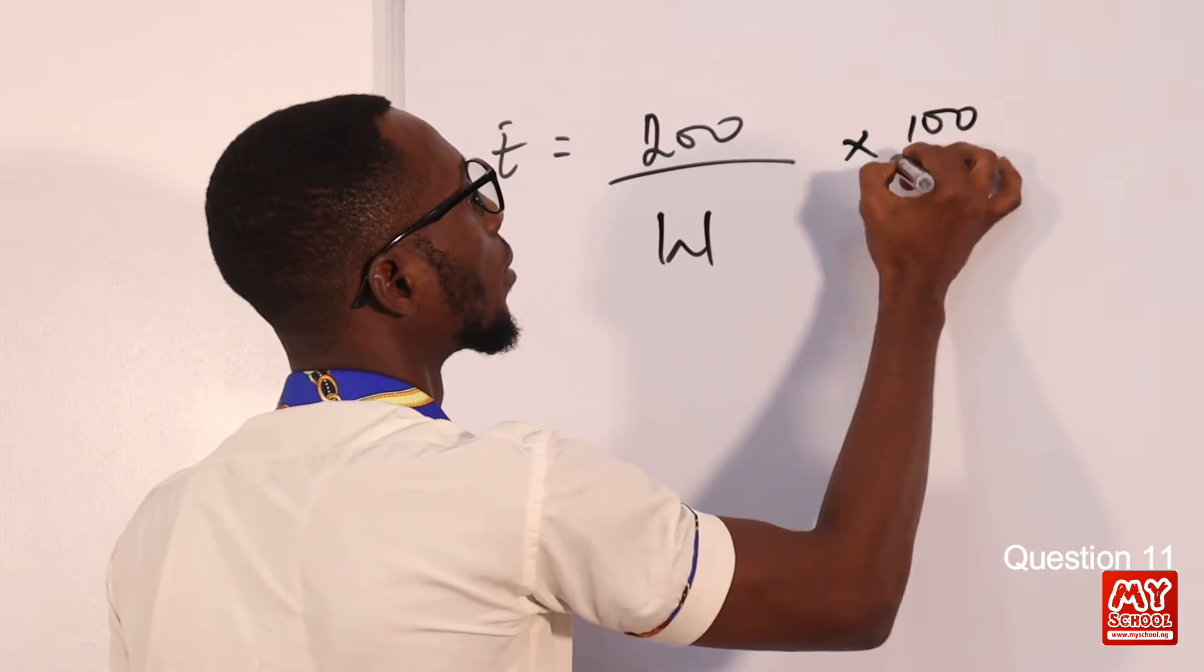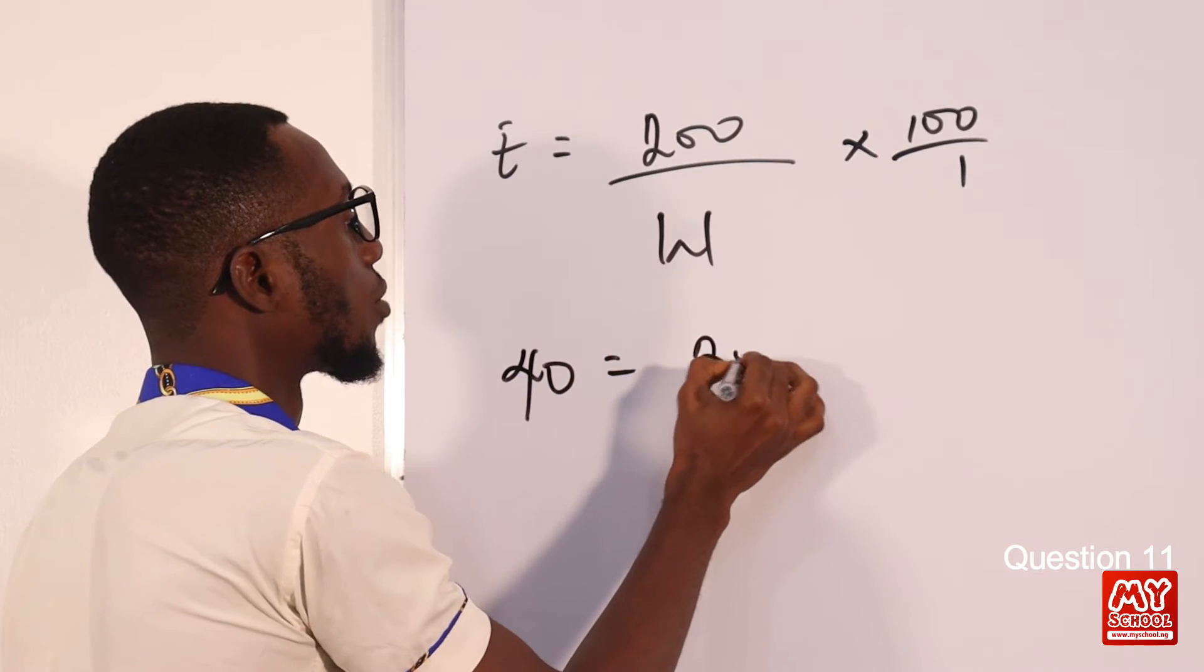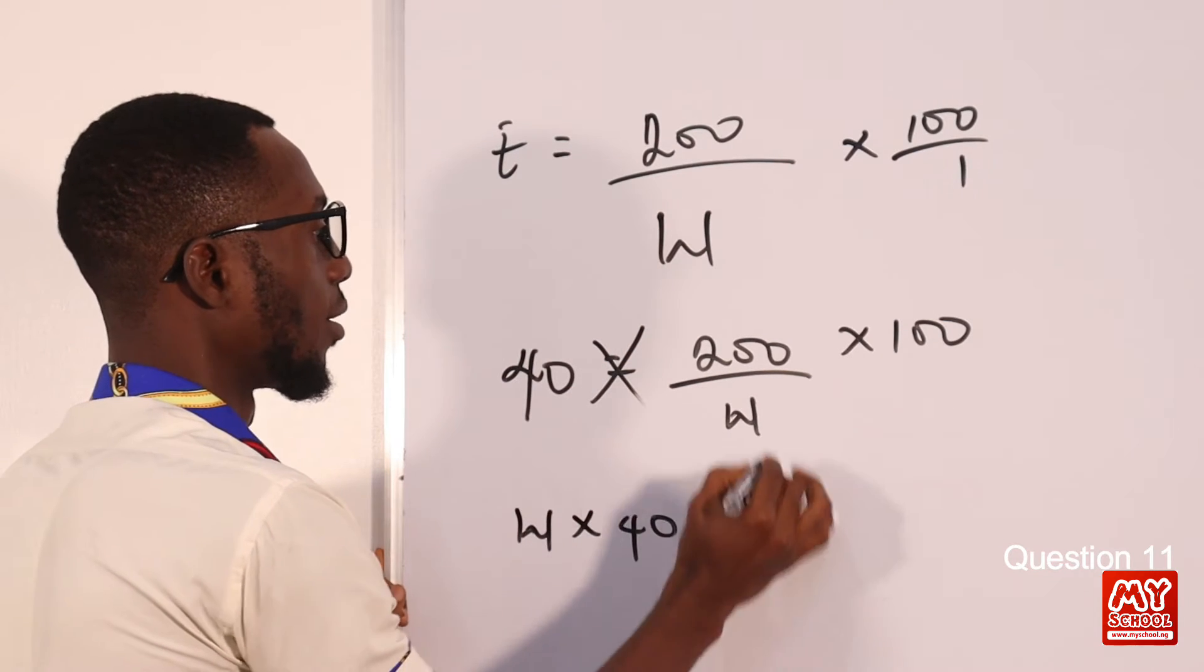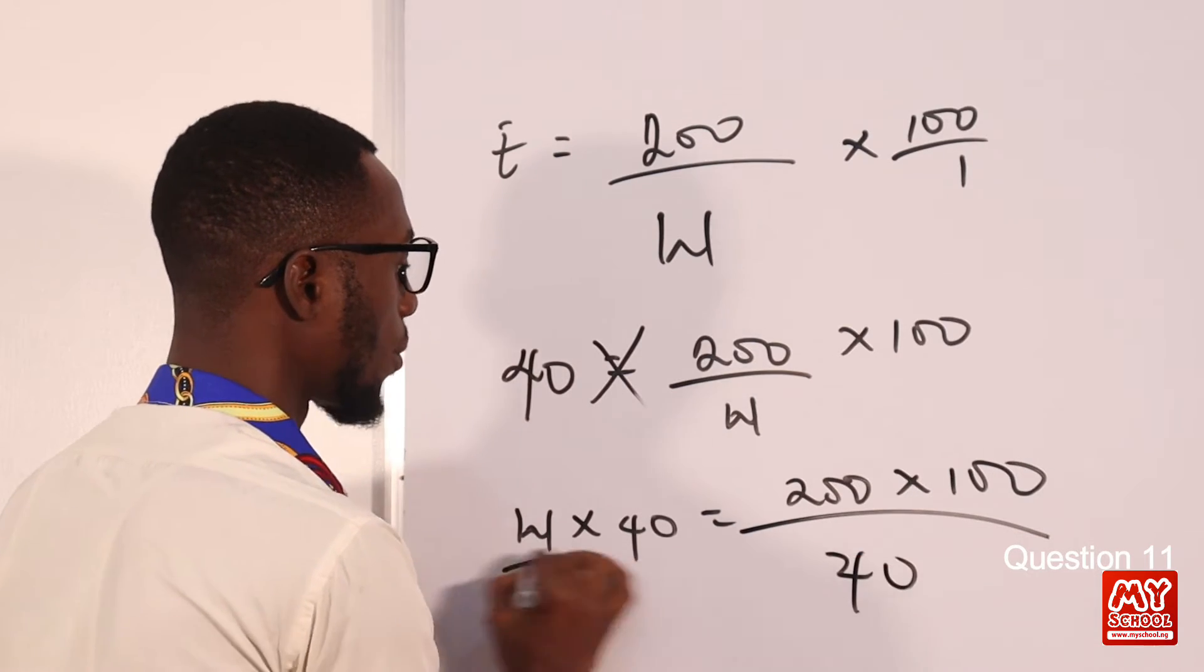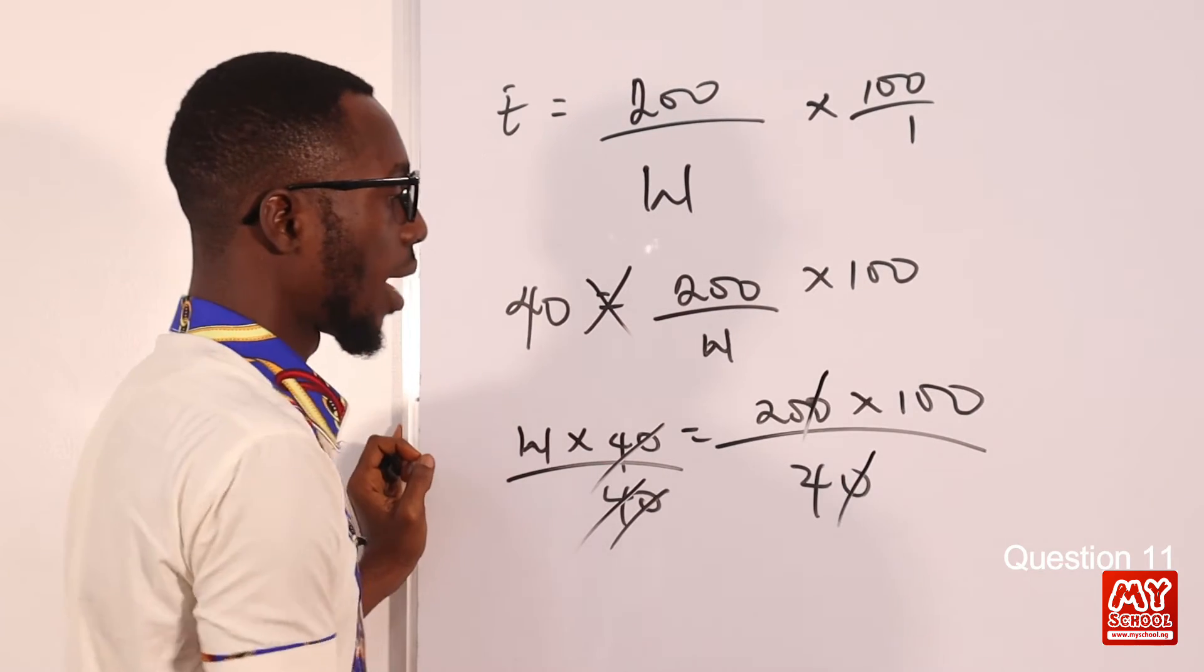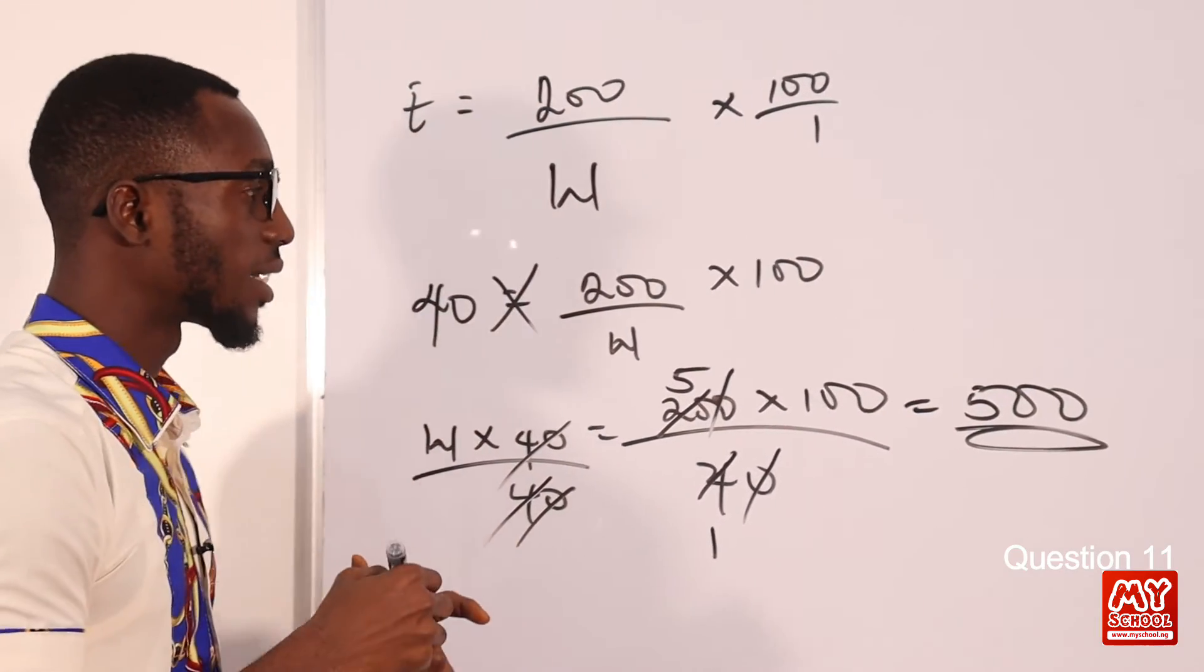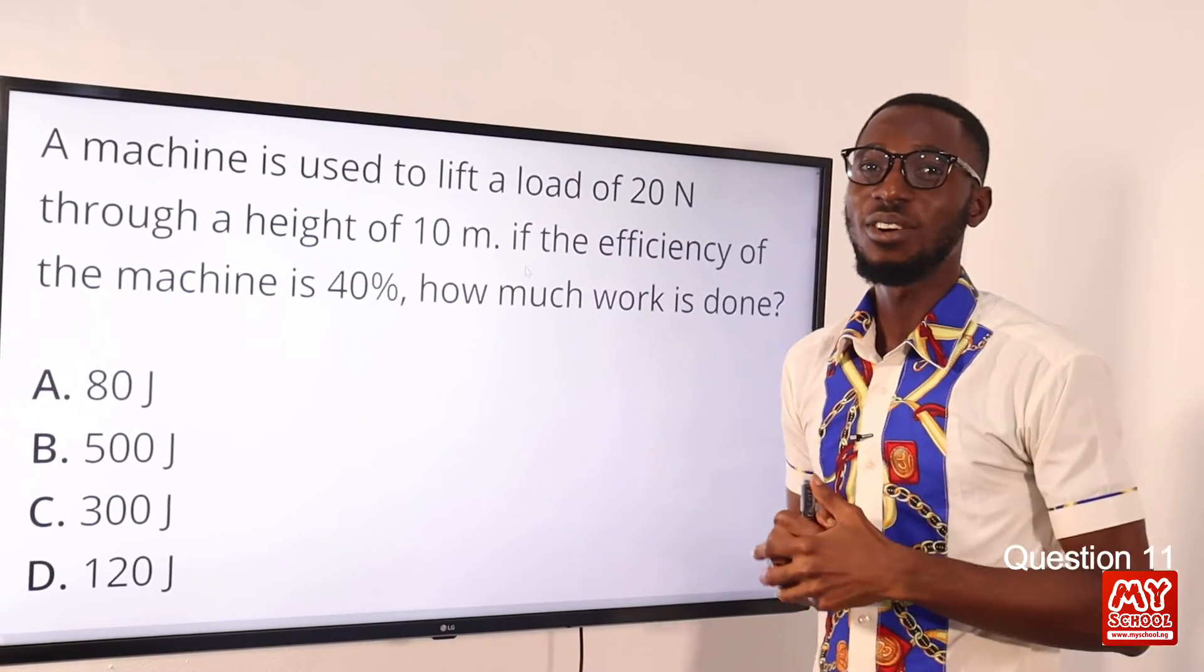So the efficiency is giving us 40. So we have this. When we cross multiply, we have this equals 200 times 100 divided by 40. So this strikes out, I have 40 into 1, 40 into 5. 5 times 100, I have 500. So let's see if we have 500 in the options provided. Of course we can find that in option B. So option B is the correct option.